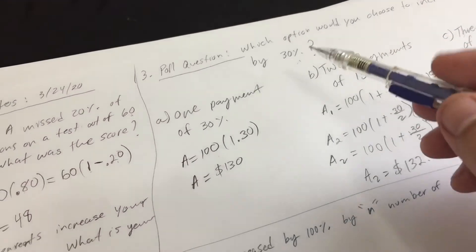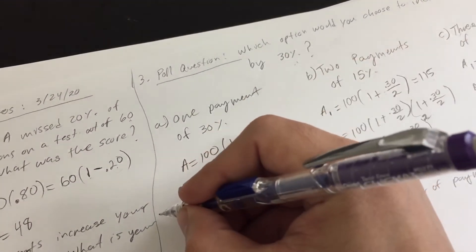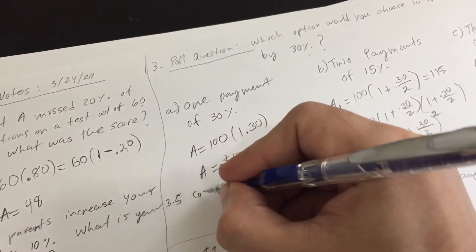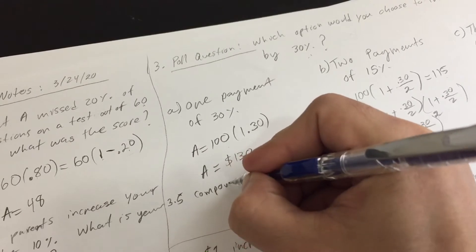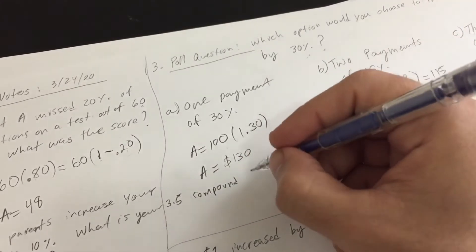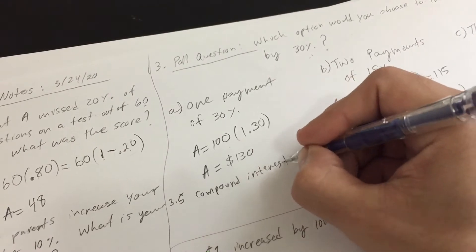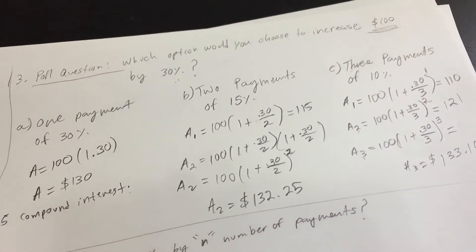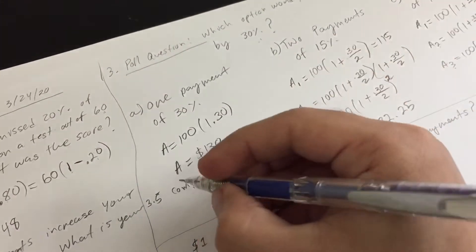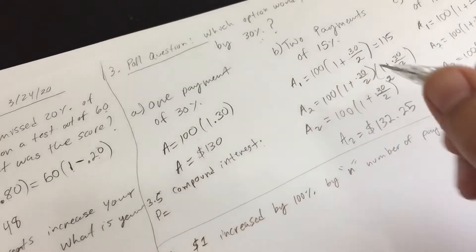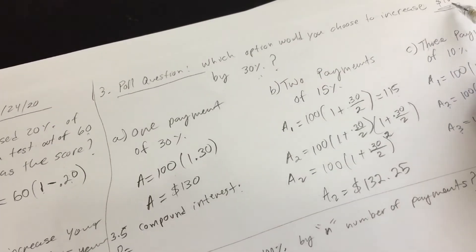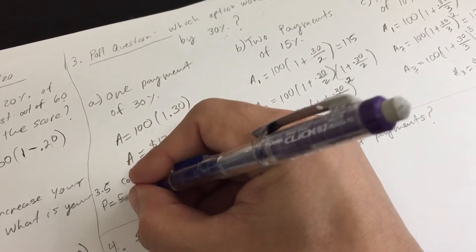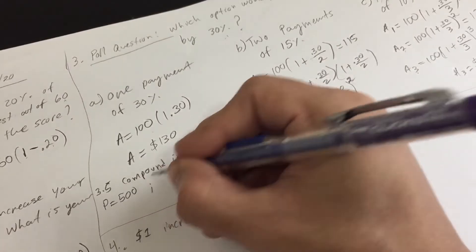This idea is called compound interest — I'll label it as number 3.5. Compounding the interest means you're building interest on your interest, some number of times. Let's say P for principal — which is what we begin with. In the previous case it was $100. Suppose our initial amount for this next example is $500.